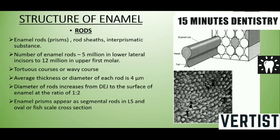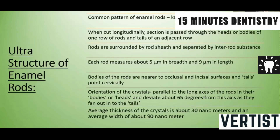These enamel prisms appear as segmental rods in longitudinal section and fish-tail in cross-section. The common pattern of the enamel rod is keyhole or paddle shape. When cut longitudinally, the section passes through the heads or bodies of one row of rods and the tails of an adjacent row. Each rod is surrounded by a rod sheath and separated by interrod substance, and each rod measures about 5 micrometers in breadth and 9 micrometers in length.